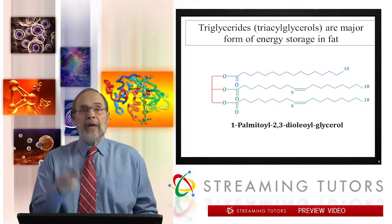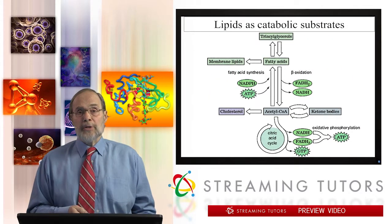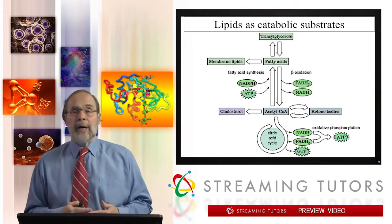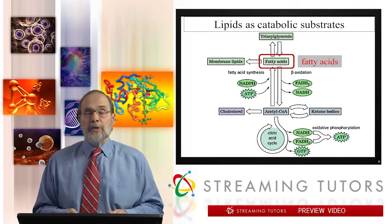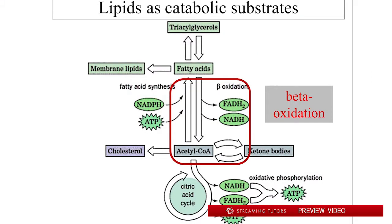We're going to look today at how those fatty acids get used as energy sources. Fatty acids are released from triglycerides by lipases, then those free fatty acids are subject to beta-oxidation. That process will occupy most of our attention today. The reason we focus on it, even though it's only a small fraction of the energy fatty acids yield, is because the end product of beta-oxidation is acetyl-CoA. Beta-oxidation goes on in the mitochondria, just like the citric acid cycle, and its end product acetyl-CoA mirrors the end product of pyruvate processing from glycolysis entering the citric acid cycle.